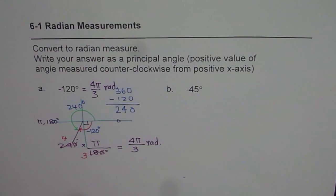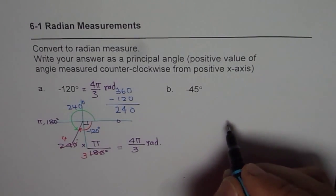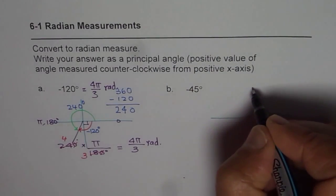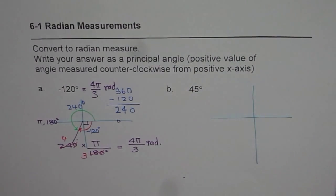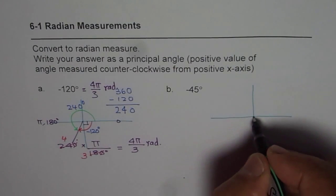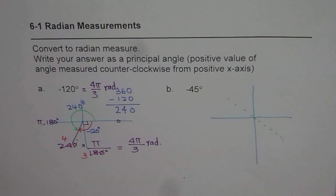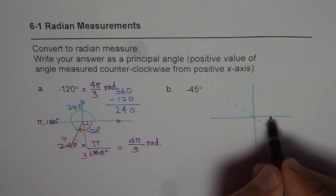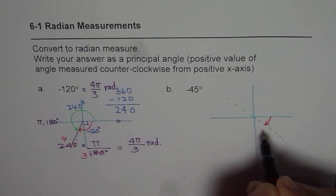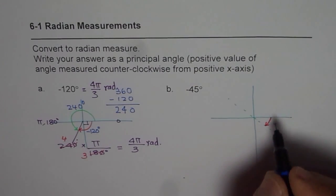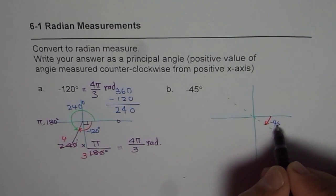Let's do minus 45 degrees now. Pause the video, answer, and then check with my solution. When we say minus 45 degrees, it means we are dividing the coordinate diagonally — we are talking about an angle that is 45 degrees clockwise. So this is minus 45 degrees for us.